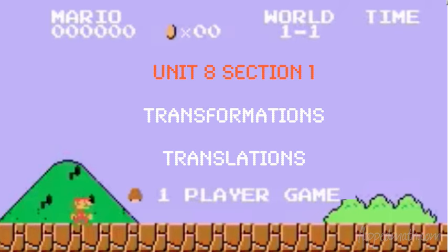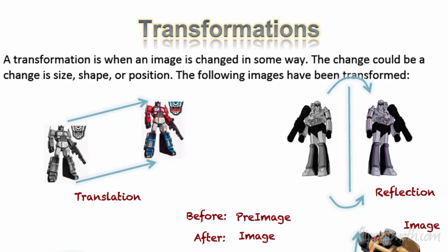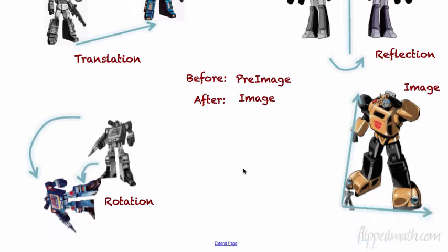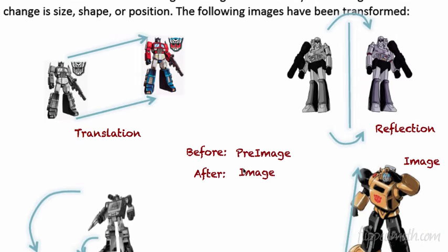Welcome everybody — Unit 8, Section 1. We're talking about transformations and translations. We're going to bring out Mario and look at him later. First, we'll start with the Transformers. A transformation is when an image is changed in some way — very simple. If you change an image, that's a transformation. There are four types you should know about, which you may have seen in 8th grade math.